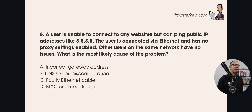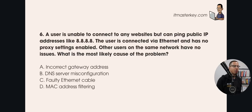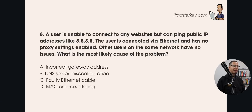A user is unable to connect to any websites but can ping public IP addresses like 8.8.8.8. The user is connected via Ethernet and has no proxy settings enabled. Other users on the same network have no issues. What is the most likely cause of the problem?